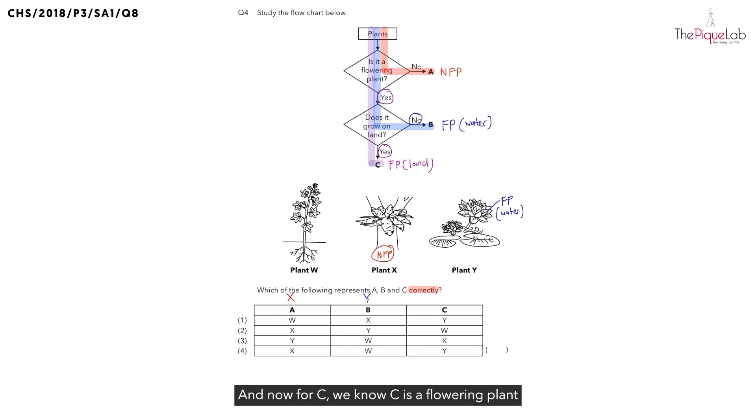And now for C, we know C is a flowering plant that lives on land. So which plant is that? We can see it is plant W because plant W here, it is a flowering plant and it lives on land. Which means what should be the correct answer? If we match this to the options, the correct answer has to be option 2.